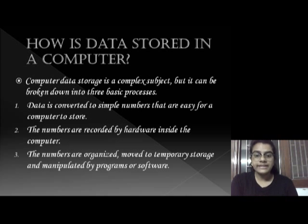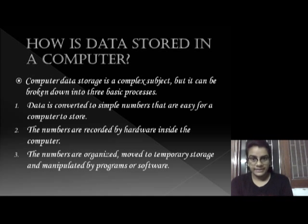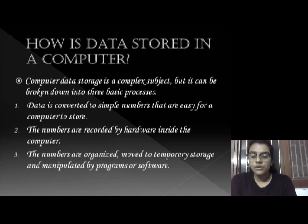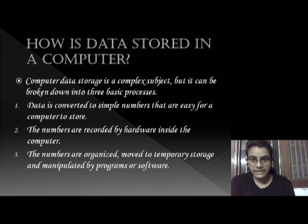Now we'll learn how data is stored in a computer. The process of data storage is very complex, but we can divide it into three steps. First, data is converted to simple numbers that are easy for a computer to store. Second, the numbers are recorded by hardware inside the computer. Third, the numbers are organized, moved to temporary storage, and manipulated by programs and software.